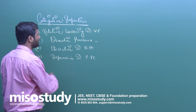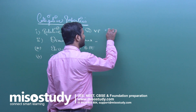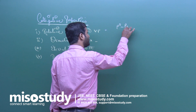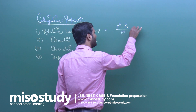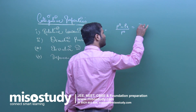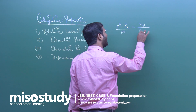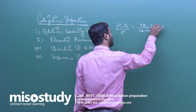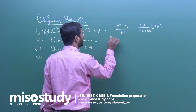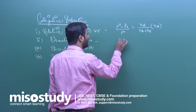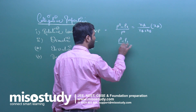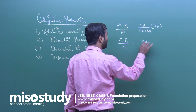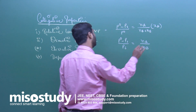What is relative lowering in vapour pressure? That is: (P naught minus P_s) upon P naught = N_A upon (N_A + N_B), which is equal to the mole fraction of solute. The next formula: (P naught minus P_s) upon P_s = N_A upon N_B. You can use this formula also.